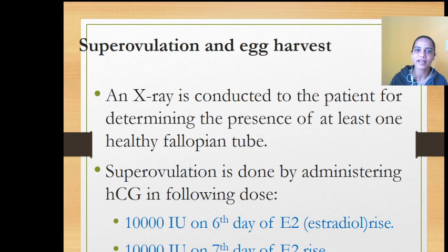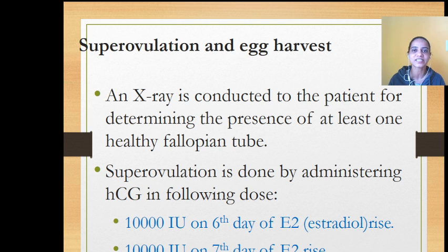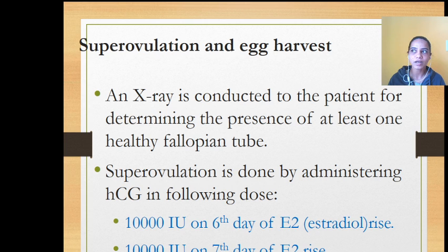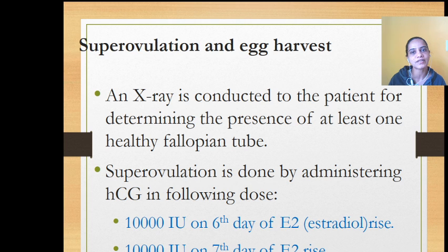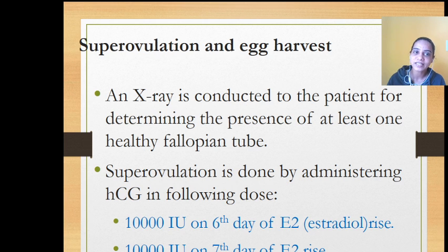The first step is super ovulation and egg harvest. Super ovulation means a large number of ova mature and get released — that is, increased egg release. An X-ray is conducted on the patient to determine the presence of at least one healthy fallopian tube, since in GIFT fertilization is going to take place inside the fallopian tube. If both fallopian tubes are damaged, one cannot go for GIFT and will have to select IVF-ET instead.